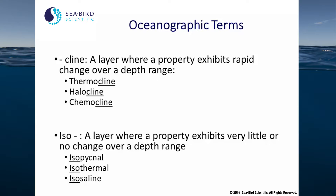The prefix 'iso' designates a layer where a property exhibits very little or no change over a depth range. Isopycnal is generally thought of as a surface in the ocean in which there is no density change. Isothermal is a layer of no temperature change. And isosaline is a layer of no salinity change.